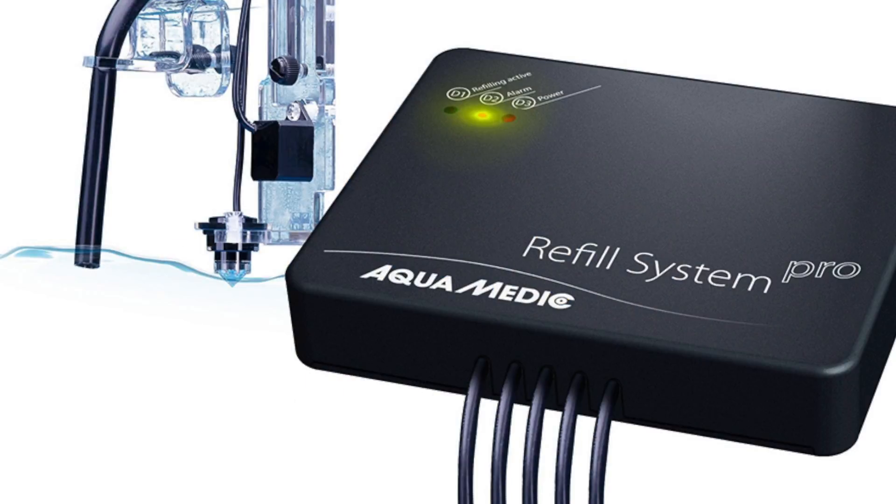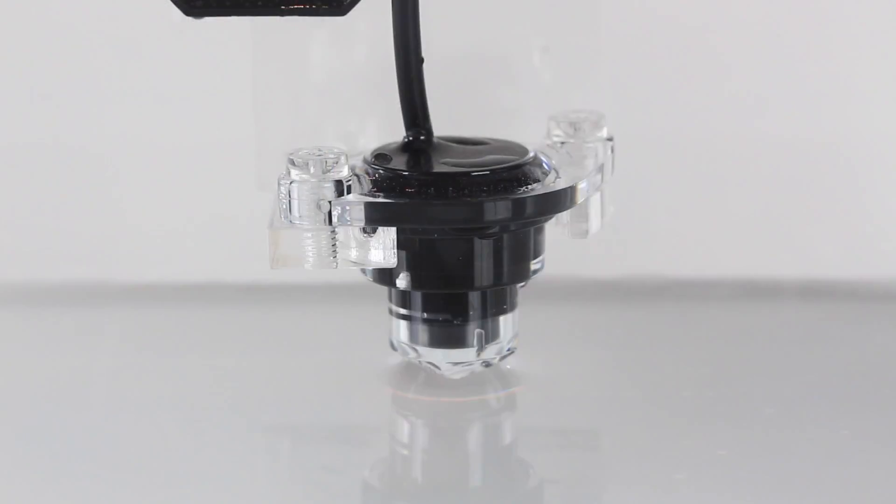The Aquamatic Pro ATO is a complete plug-and-play auto top-off system with a well thought out design and features. It uses an infrared sensor mounted in the tank to detect changes in the water level.